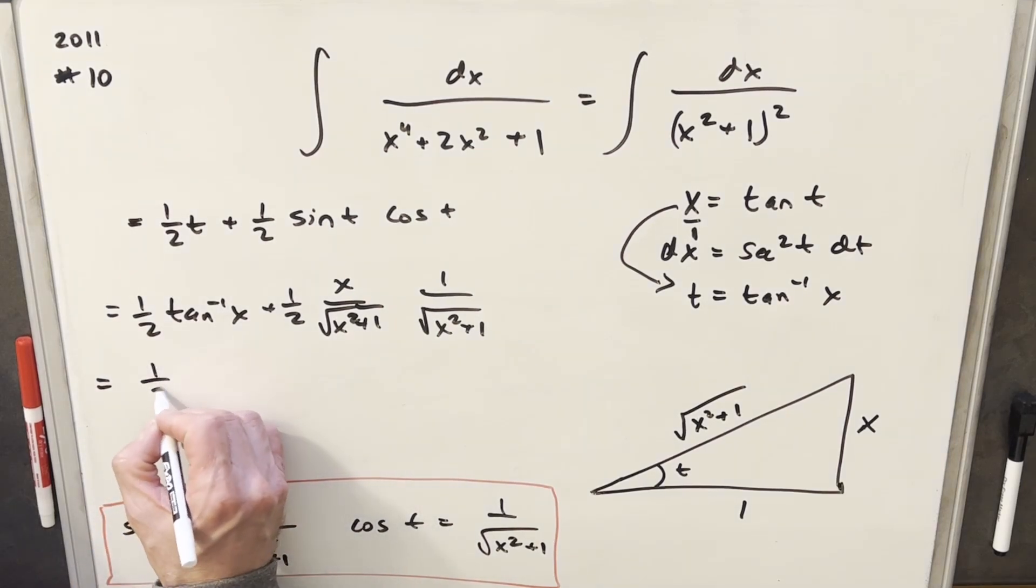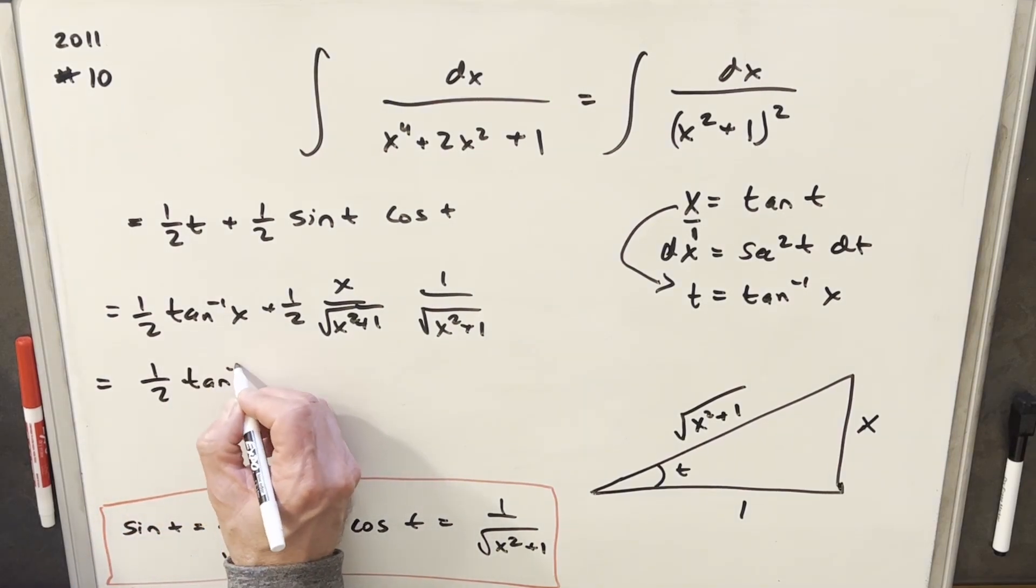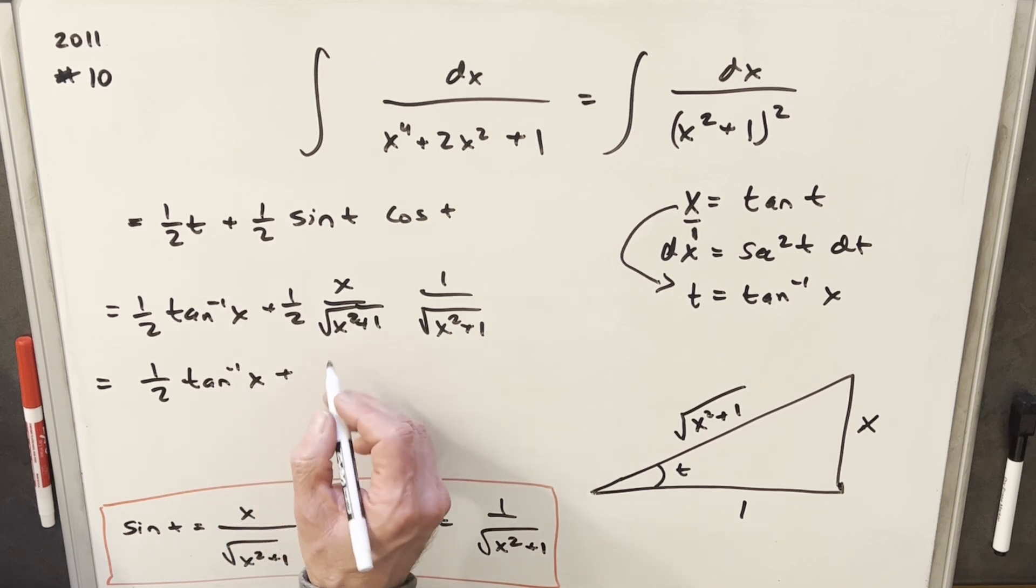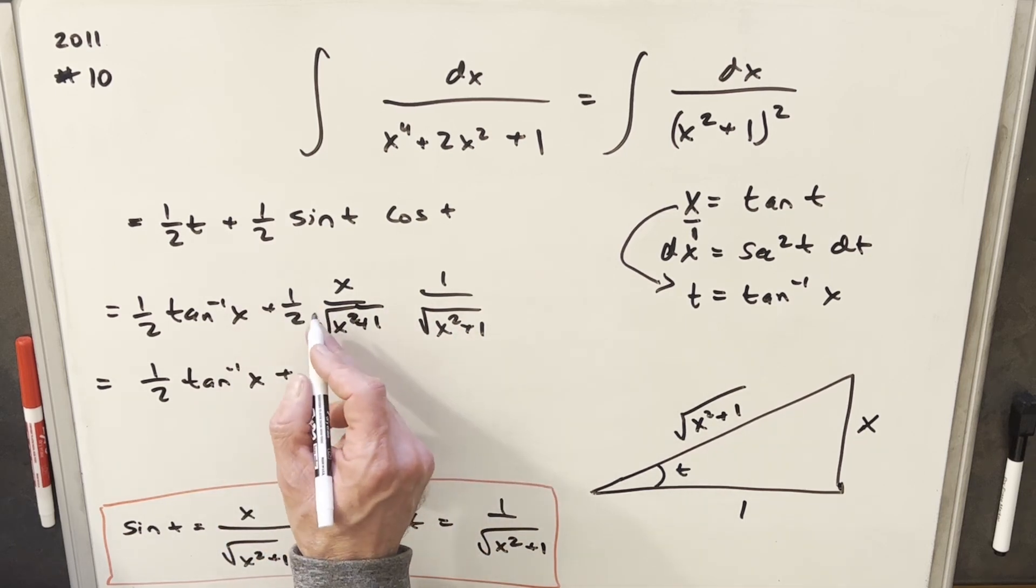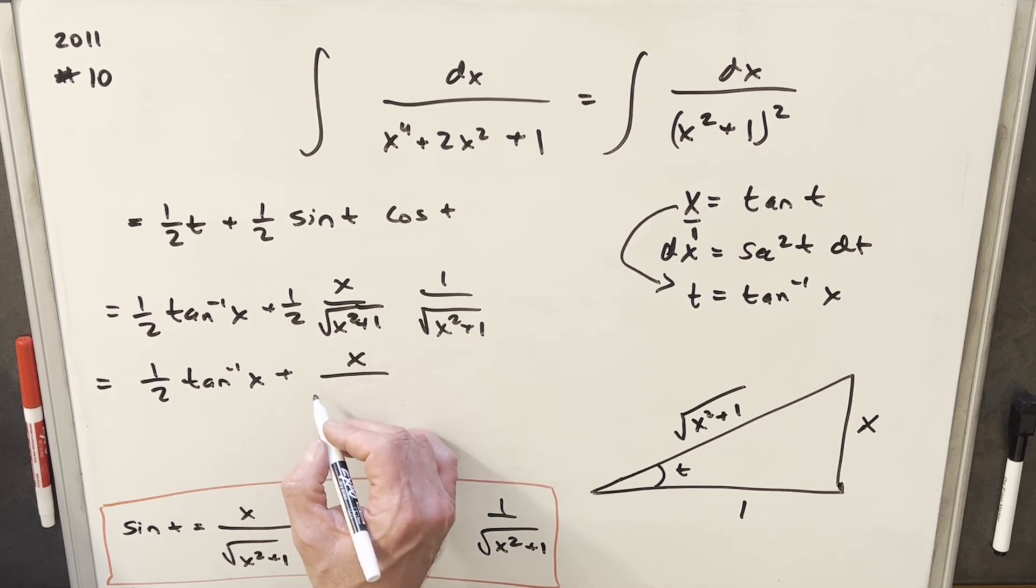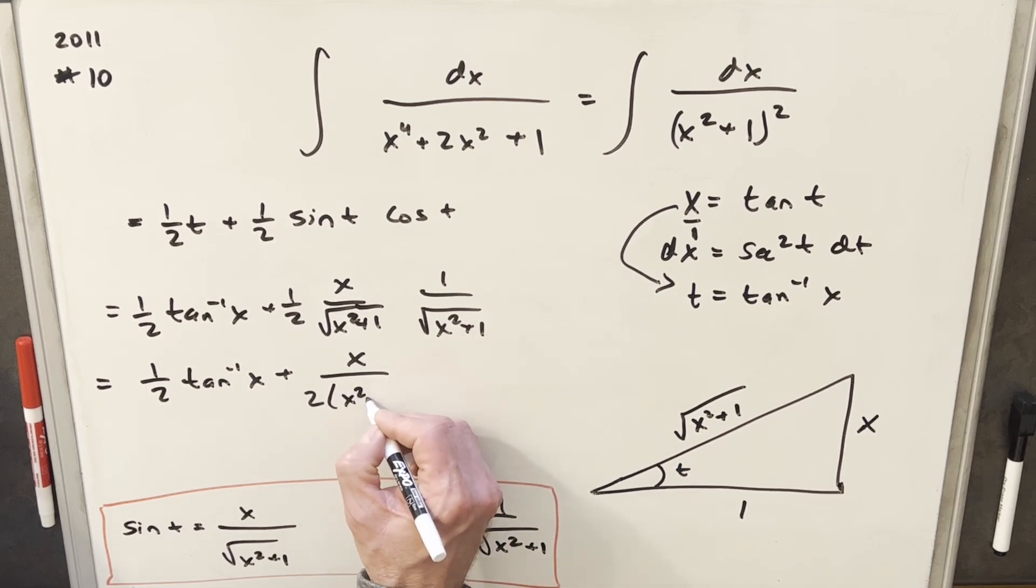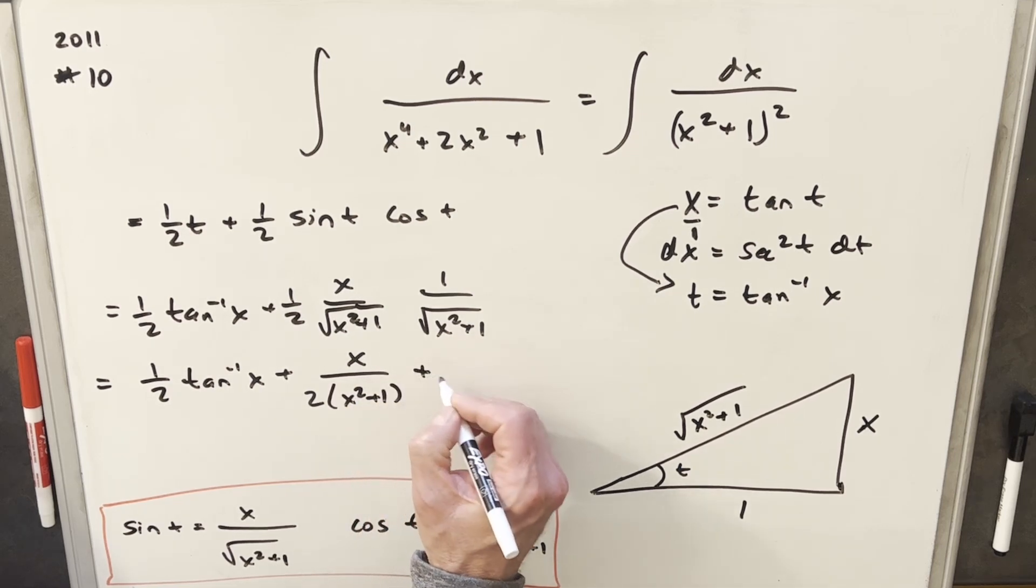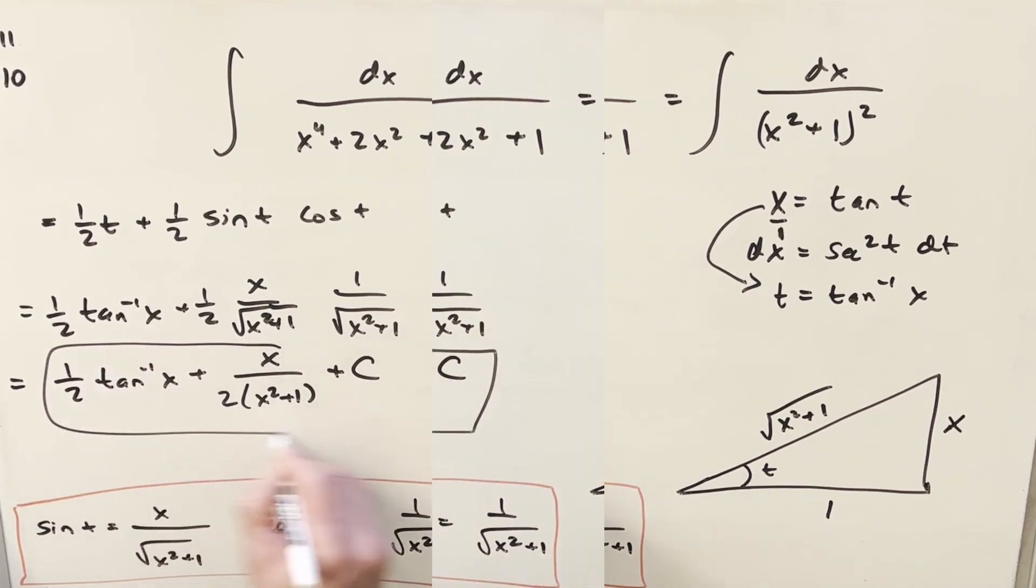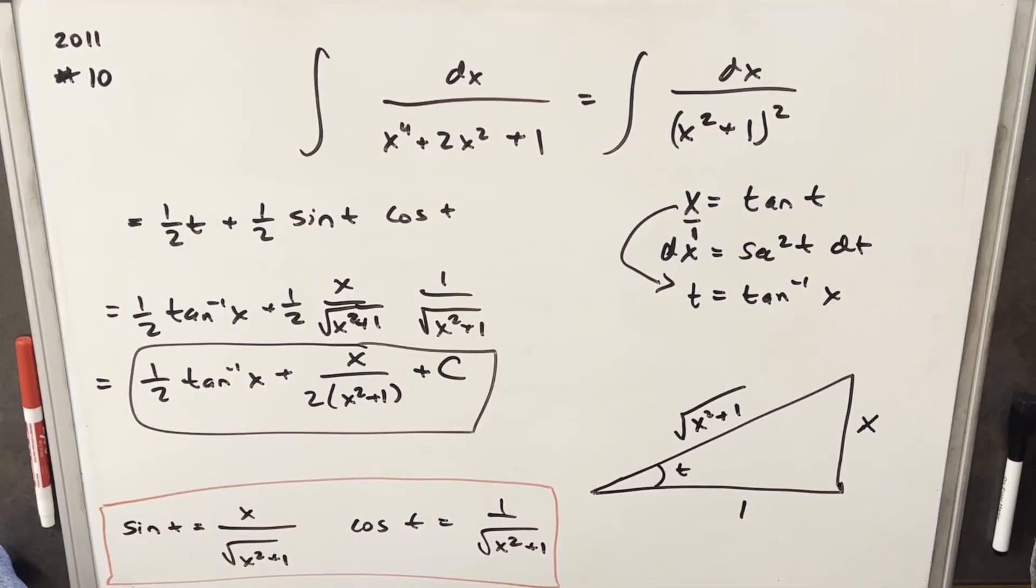Okay, now to finish it off, this is our final solution. We're going to have 1 half arctan of x plus... We just got to multiply this stuff across. So we're going to have this 2. We multiply square root x plus 1 times square root x plus 1. We're just going to get x squared plus 1 plus c. And that's it. Thanks for watching, everyone. Please subscribe. Have a great day.